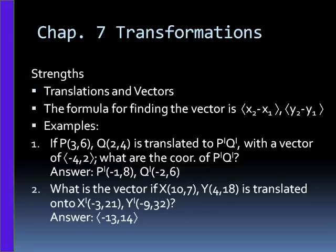Moving right along into the fourth and final part of this episode, chapter 7, transformations. Here we have my strengths, translations and vectors. The formula to find a vector is x sub 2 minus x sub 1, y sub 2 minus y sub 1.